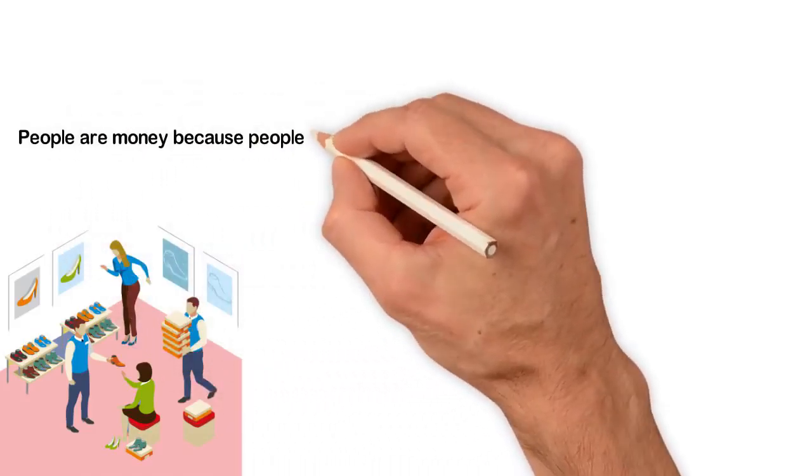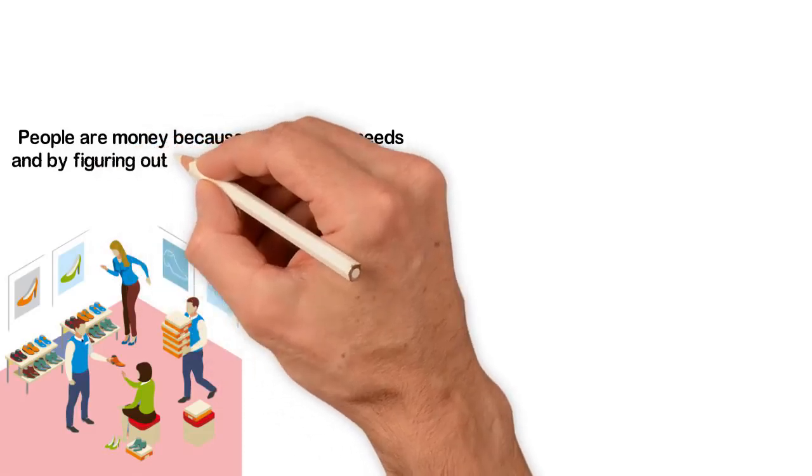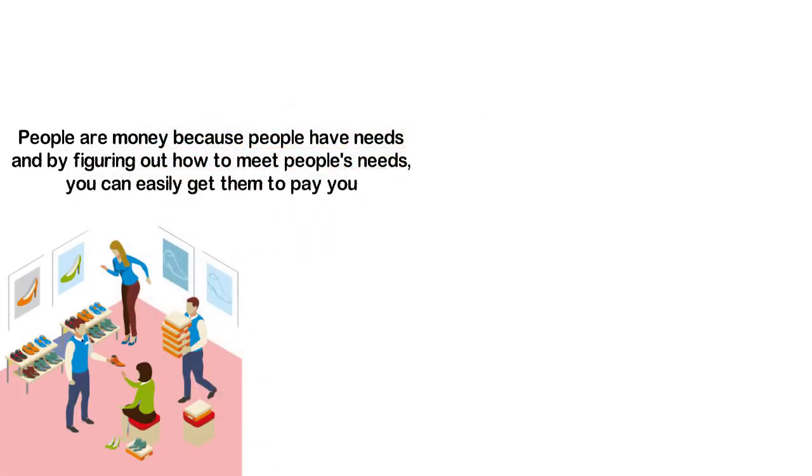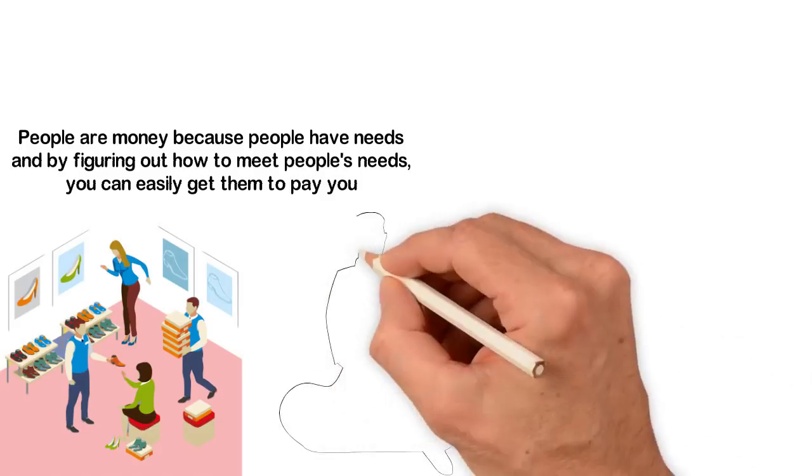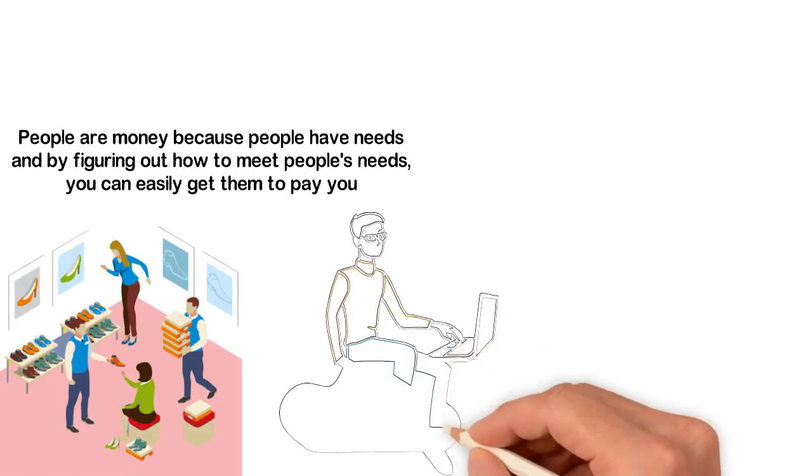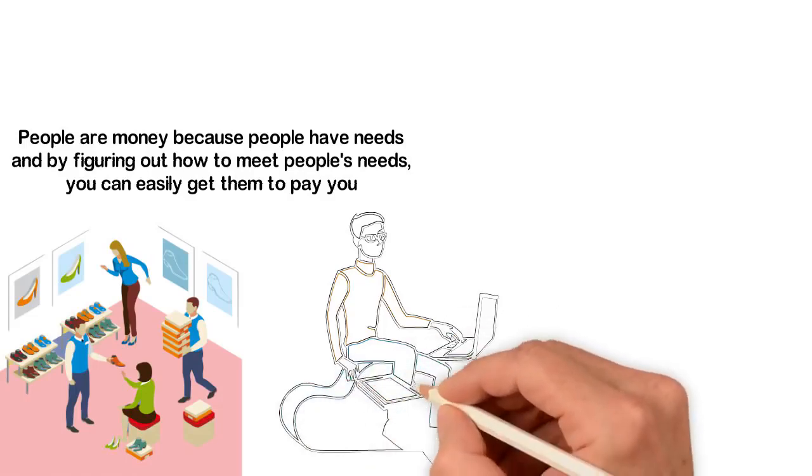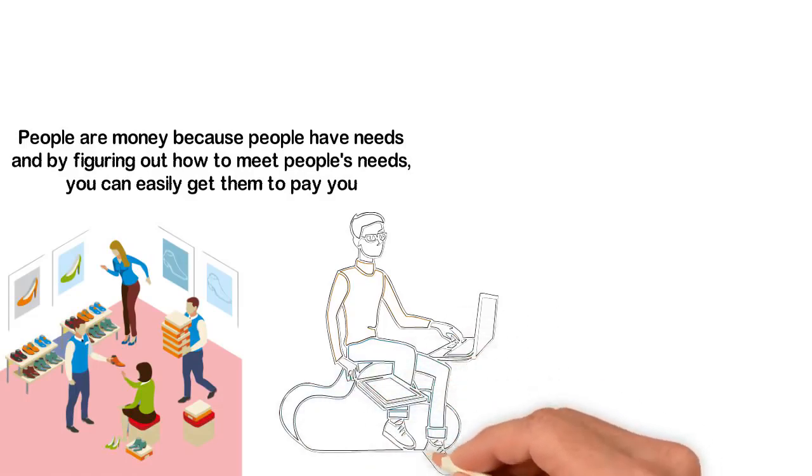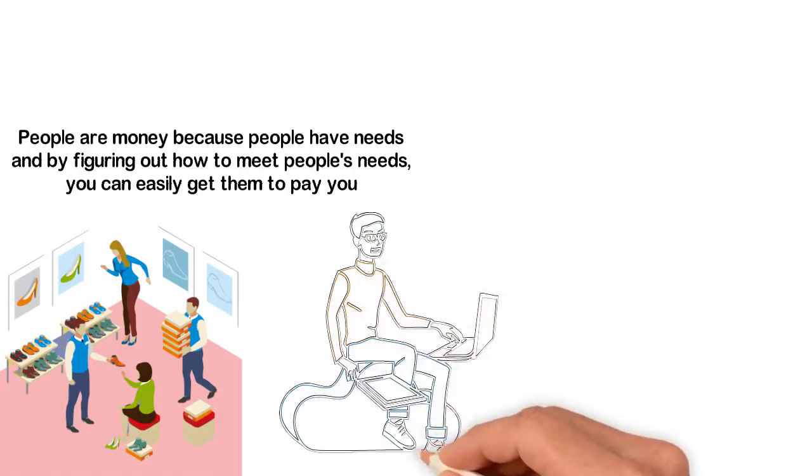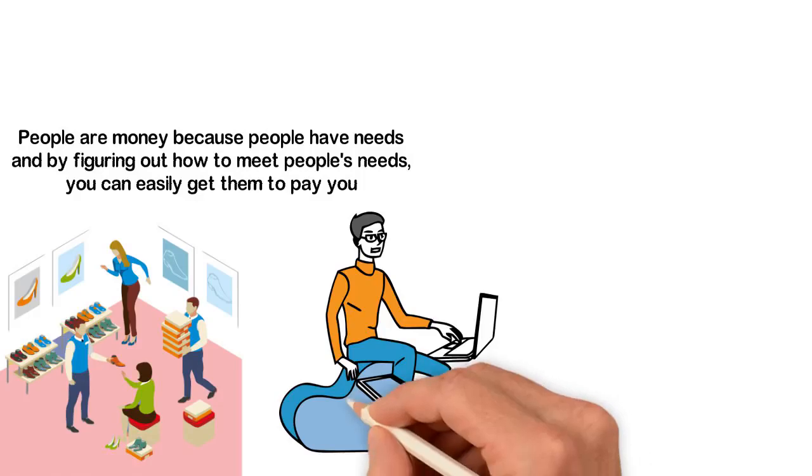People are money because people have needs and wants, and by figuring out what people want, you can easily get them to pay you. Now, what if you can see all these people in a single room? If there could be a magic that can bring a billion people together in the same room, since we've established that people are money, you being in that room should make you a millionaire, right?